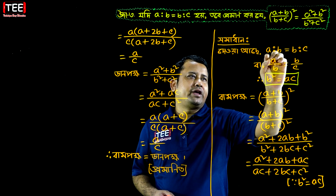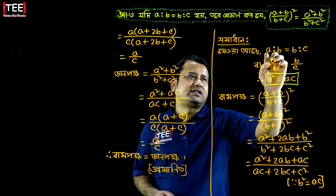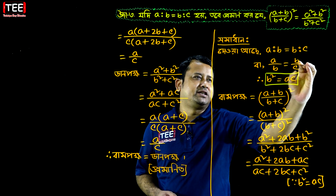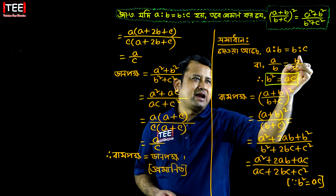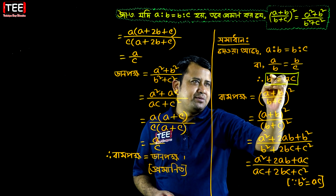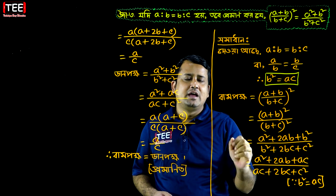Remember that if A is connected to A by B to C, then the ratio of B squared gives A to C as an example.